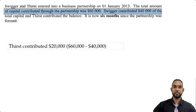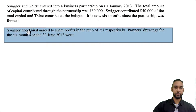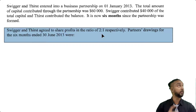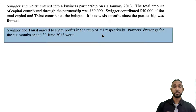The question goes on to say that Swigger and Thirst agree to share profits in the ratio two to one respectively. That means you add up those two numbers — two plus one equals three — and put each number over three to show the fraction of profit each partner will receive at the end of the appropriation account. If you're not familiar with partnerships, check out my partnership playlist linked below.